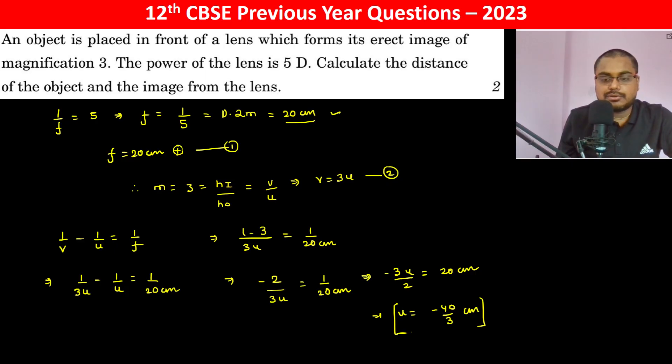The image distance v equals 3u, so v equals minus 40 centimeters. That's the distance of the object and image from the lens.